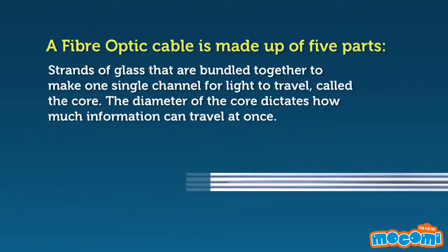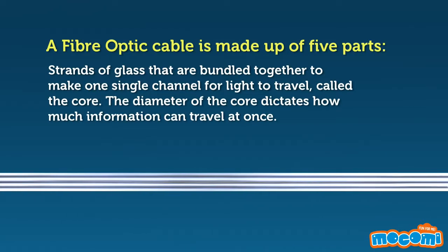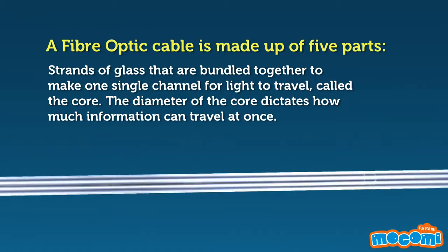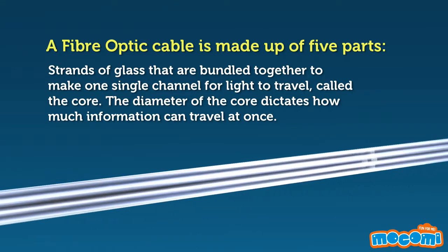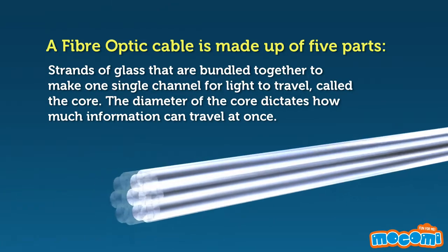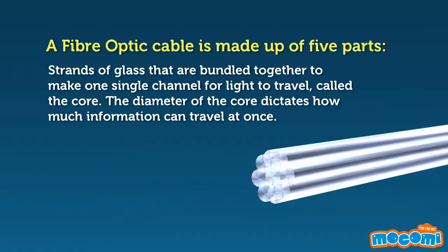A fibre optic cable is made up of five parts. Strands of glass are bundled together to make one single channel for light to travel, called the core. The diameter of the core dictates how much information can travel at once.